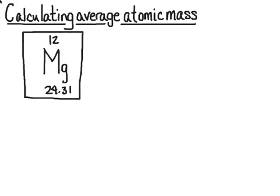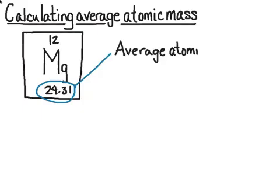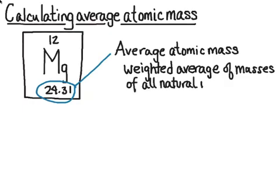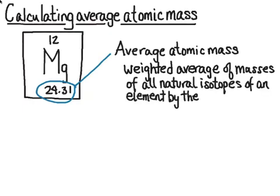Let's take a look at magnesium. It has an atomic number of 12, and those numbers down there at the bottom are an average, a special type of average that gives us the average atomic mass. This is also known as relative atomic mass. This is a weighted average of masses of all the natural isotopes of an element by their abundance.